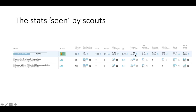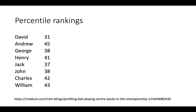These stats tend to be very difficult to interpret. Long passes 8.49 — is that good or bad? Crosses 0.17 — is that good or bad? It's really difficult to know how you should weight those types of actions. So what you do is you use percentile rankings.